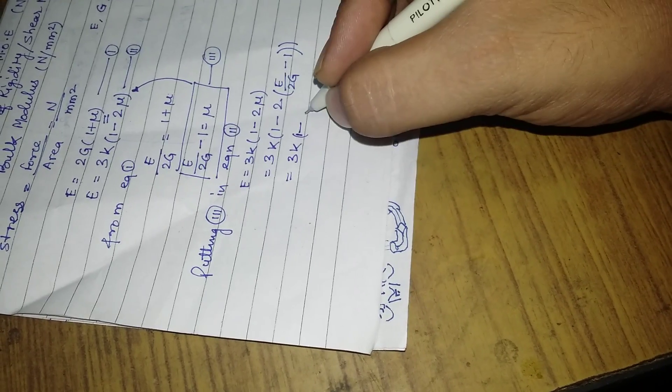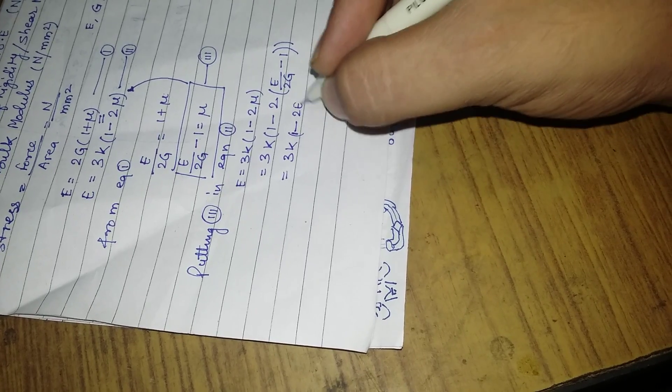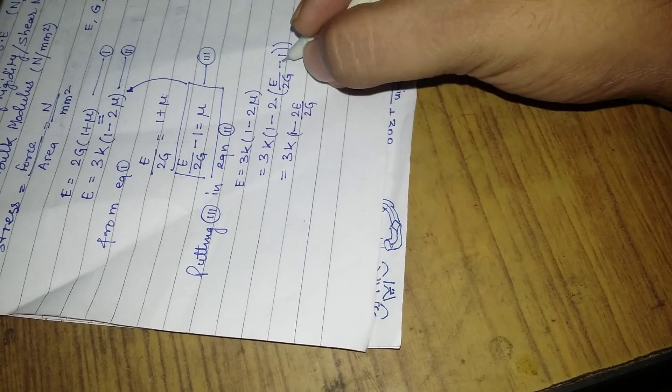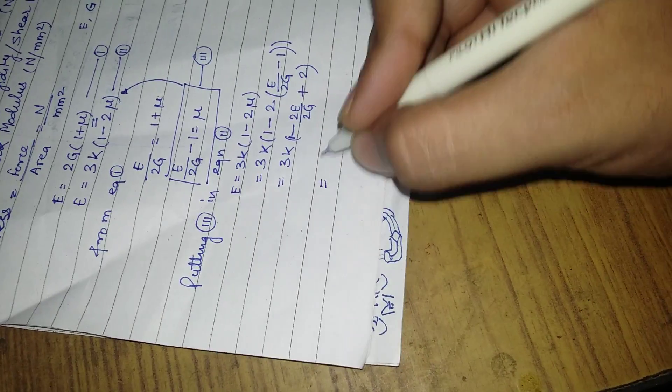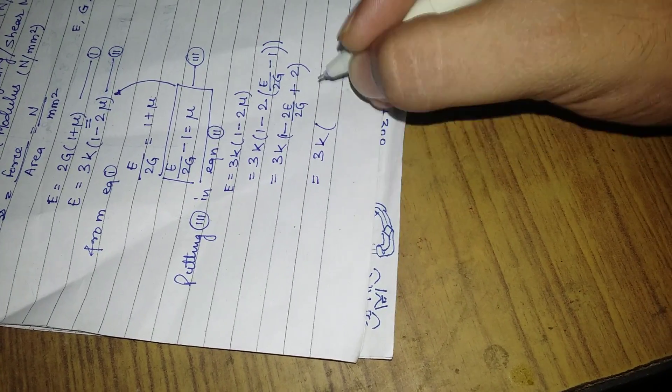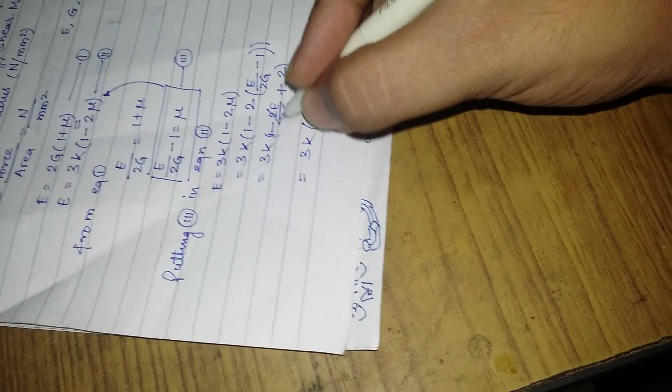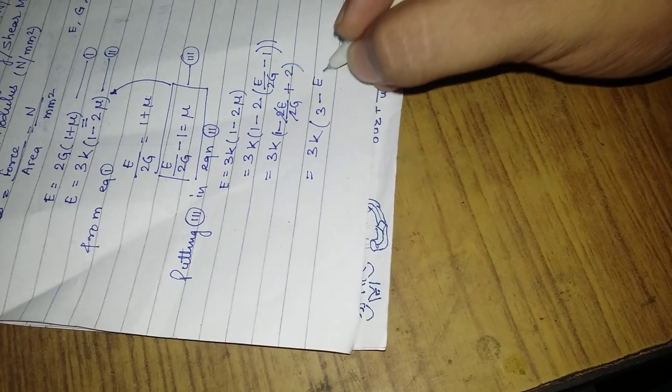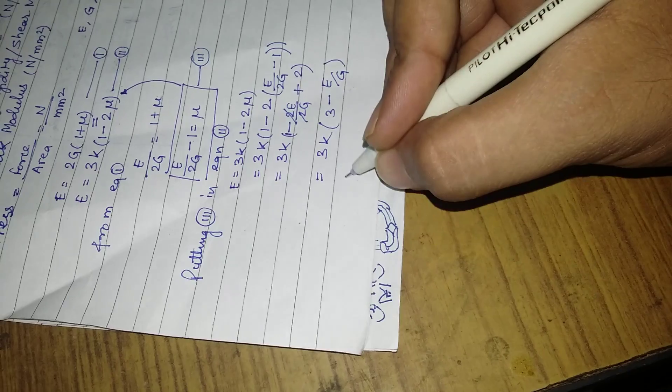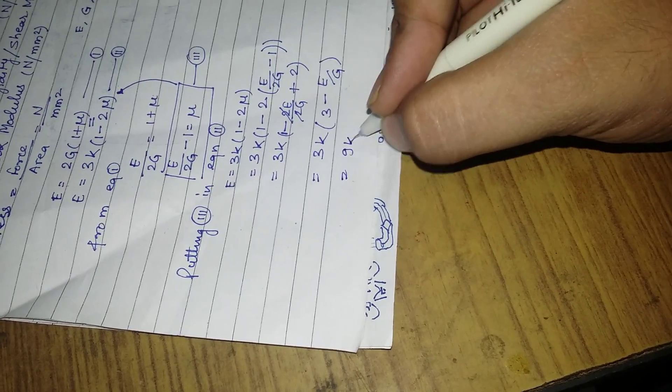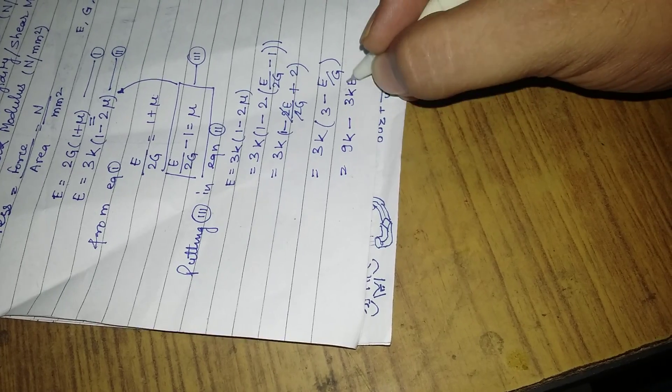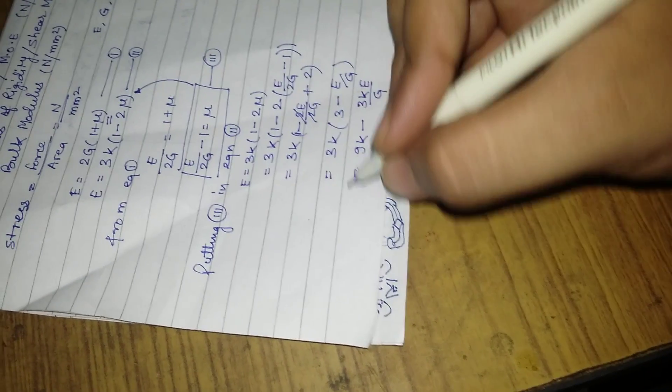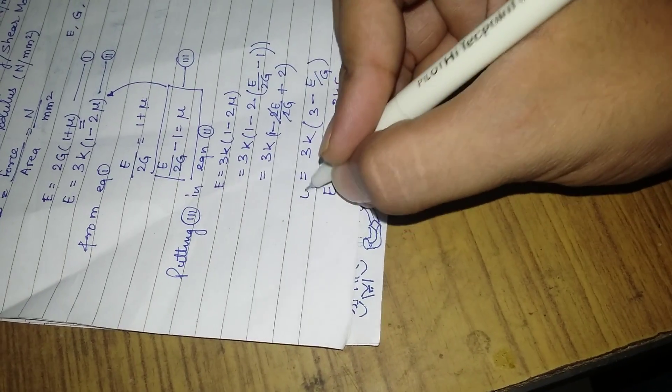This minus and this minus makes it plus 2, so 3K(1 plus E upon G), which in turn becomes 9K minus 3KE upon G, and that is the whole of E.